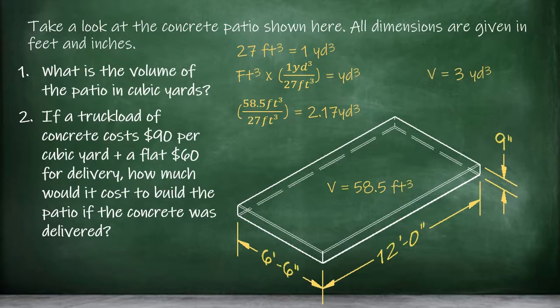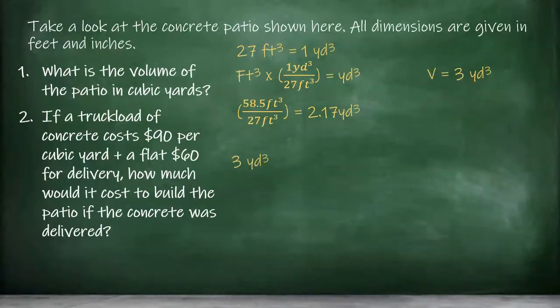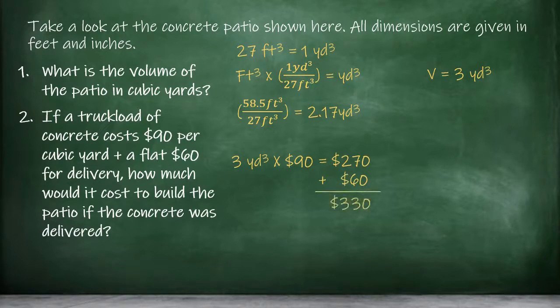If a truckload of concrete costs $90 per cubic yard and a flat $60 fee for delivery, how much would it cost to build the patio if the concrete was delivered? Three cubic yards times $90 per cubic yard equals $270 for the concrete, plus $60 for delivery for a grand total of $330 to have the concrete delivered by truck.